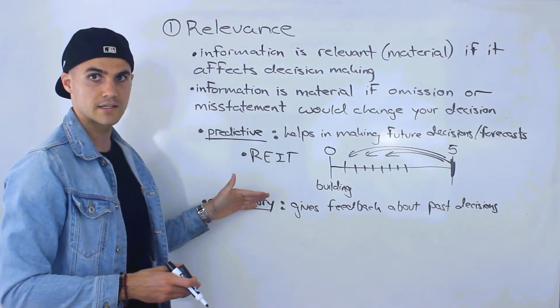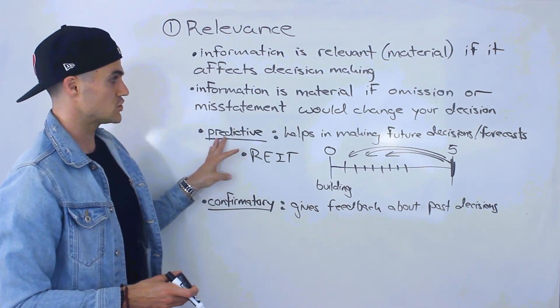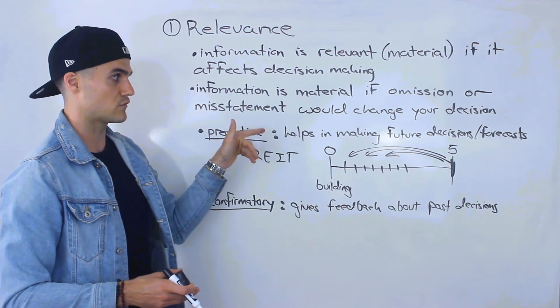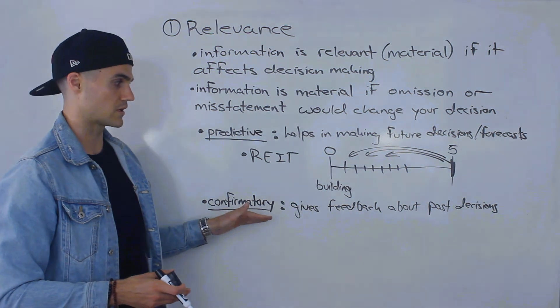So two sub-qualities that information should have to be relevant. Information should be predictive, help in making future decisions forecasts, and it should be confirmatory. Give feedback about past decisions.